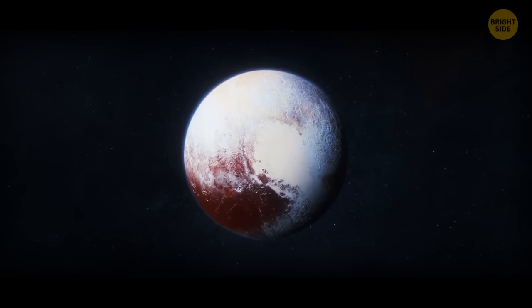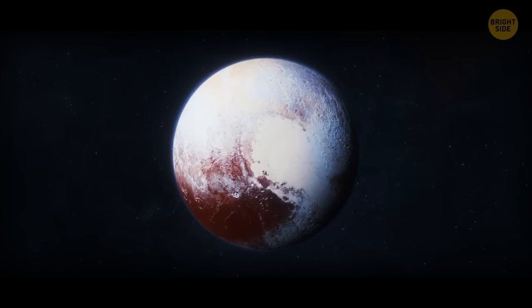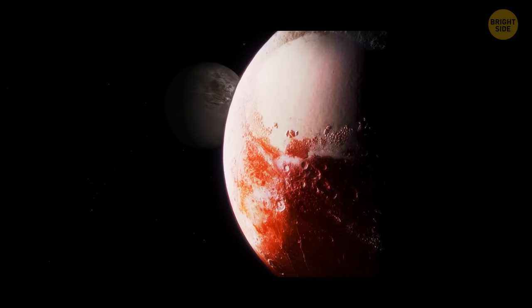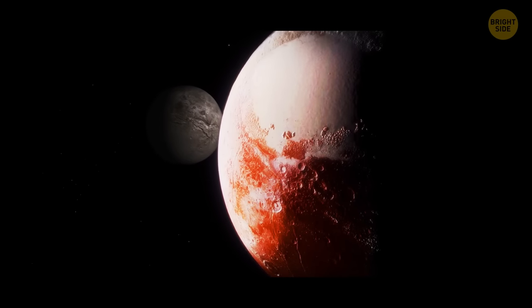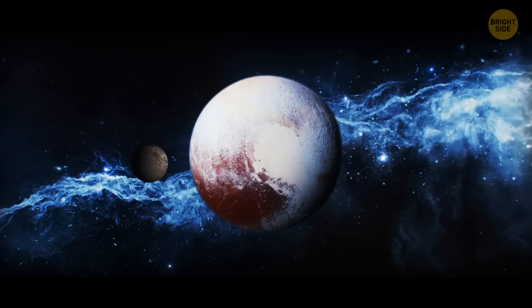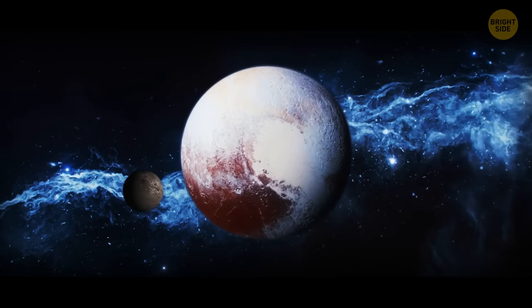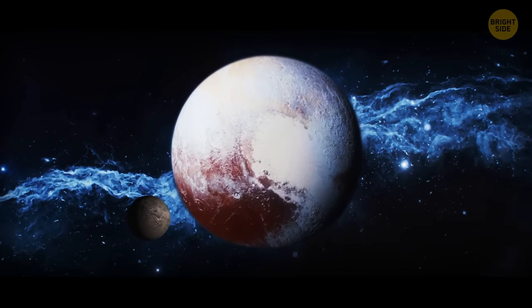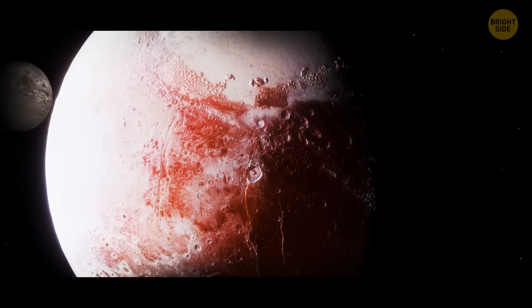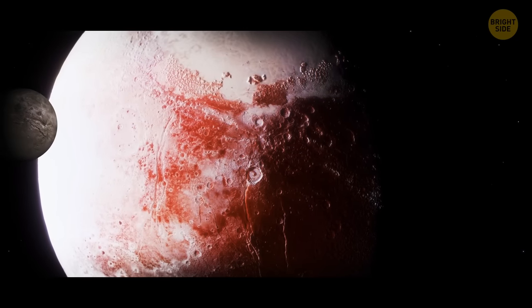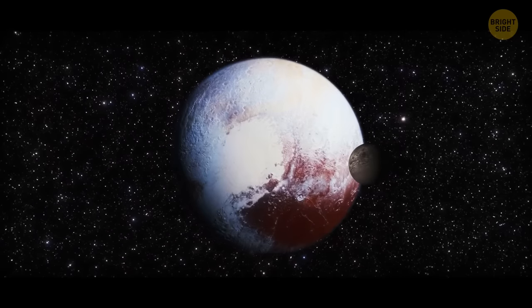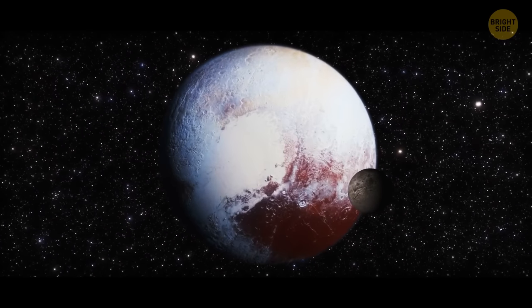We can also take the dwarf planet Pluto as an example. It has a strange rotational relationship with its largest moon, Charon. They're tidally locked, which means that they always face each other with the same side. As a result, Pluto and Charon appear to waltz around a common center of gravity, creating a unique dance in space.